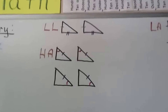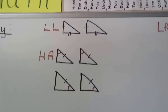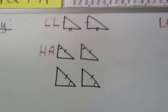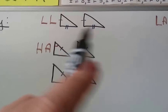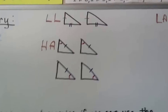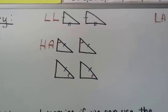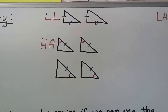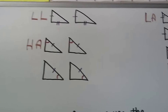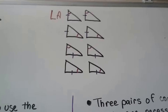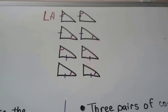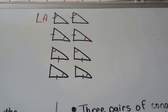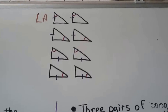For LL, that would be leg-leg: we would have one leg congruent to another leg, and then the other leg congruent to the other leg. For HA, hypotenuse-angle, we would have the hypotenuse and one of the acute angles congruent. For LA, that would be leg-angle: we'd have one of the legs and one of the acute angles congruent.